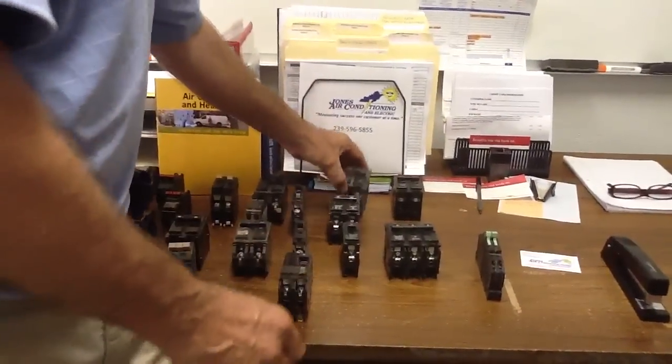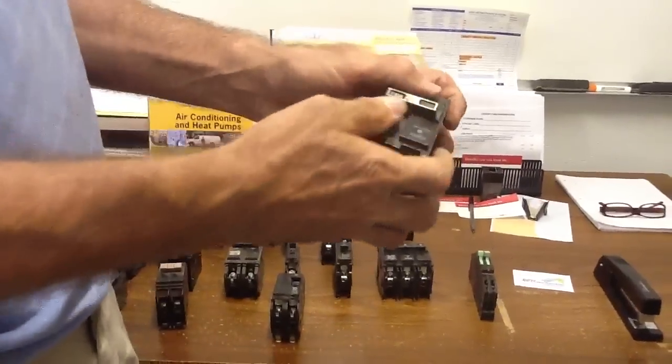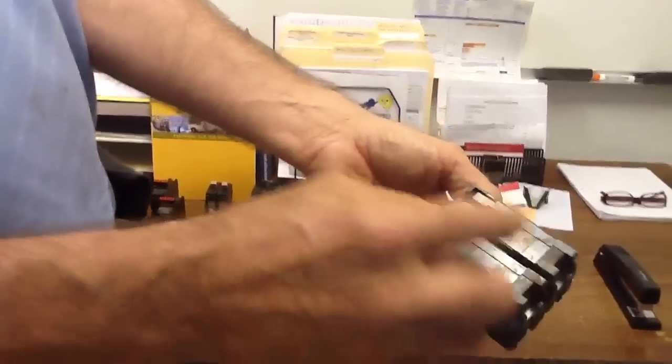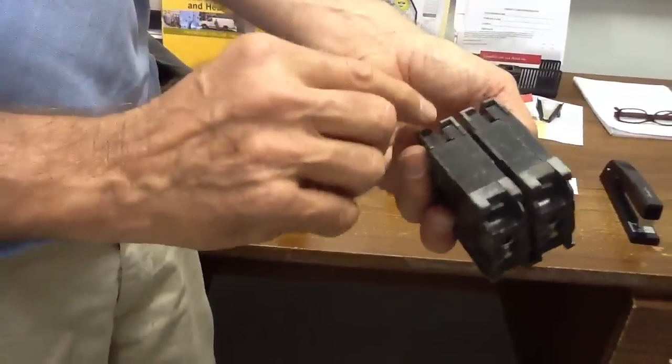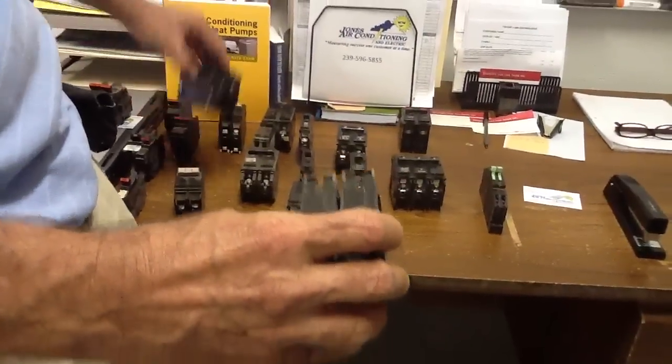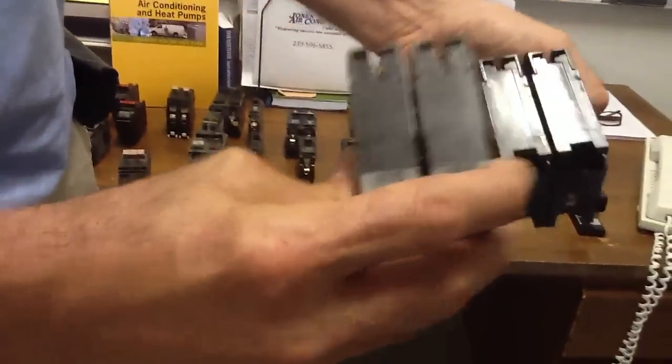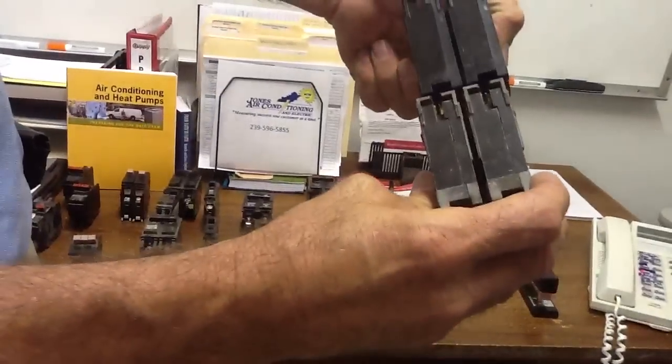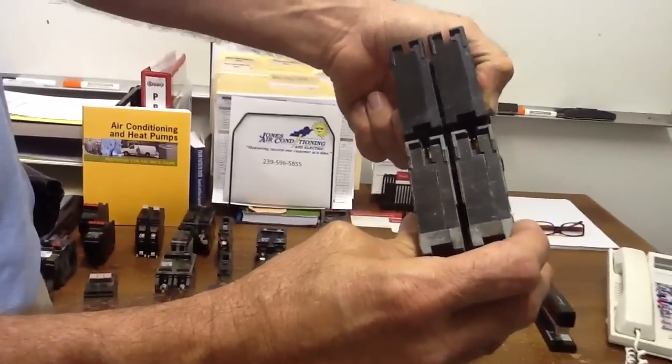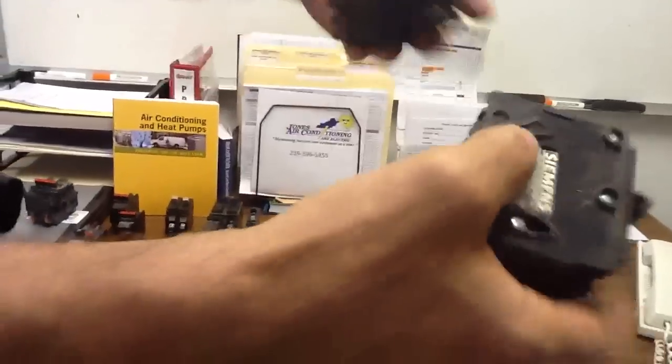The next brand is the ITE brand. The ITE is kind of similar to the Cutler Hammer, but you still can't interchange. Let me show you what I'm talking about. See how they're the same width? They're still double pole. Let's see how you can't stick them on the same bus bar. That's because the insurance companies mandated that, like I said, 20 years ago.